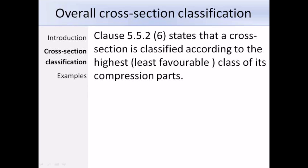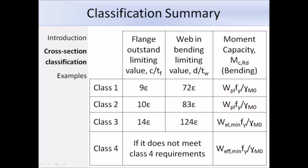Here is a summary of the class limits and corresponding moment capacity equations in Eurocode 3. In hot rolled design, most standard cross-sections will be class 1, 2, or 3. The pattern of the moment capacity equation is: modulus × yield strength / partial factor — only the modulus changes depending on class. Class 4 sections contain slender elements susceptible to local buckling; allowance for reduced resistance is made using effective widths. Since class 4 hot rolled sections are rare, the effective width calculation will not be covered in detail.